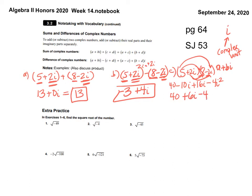One big fact you need to know: any time you see i², replace it with negative 1. So I see i² — I'm going to replace that with negative 1. I need to multiply those: 40 plus 6i plus 4. I still have like terms. 40 plus 4 is 44, plus 6i. So the answer is 44 + 6i.